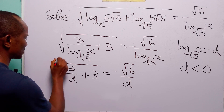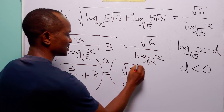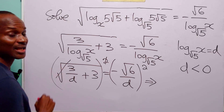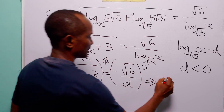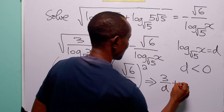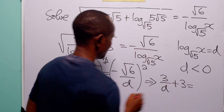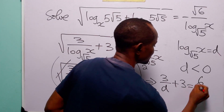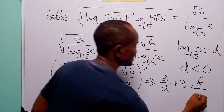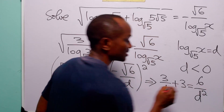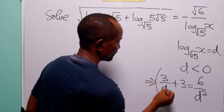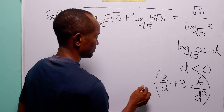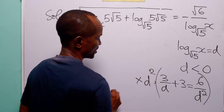To solve this equation, let us square both sides. When we do that, the square root is removed, leaving us with 3 over d plus 3. And minus root 6 squared is equal to 6, over d squared. Now to get rid of these two fractions, let us multiply through the equation by d squared.